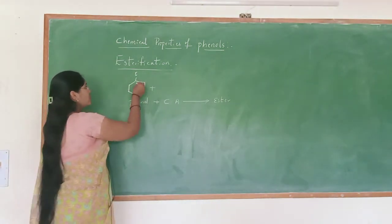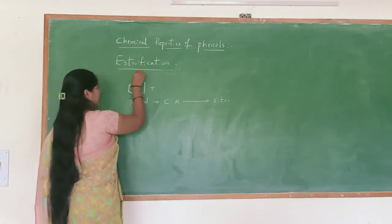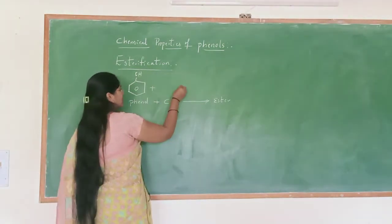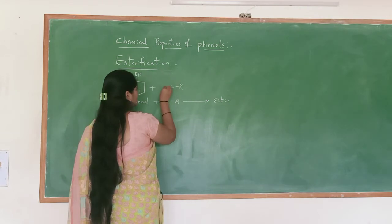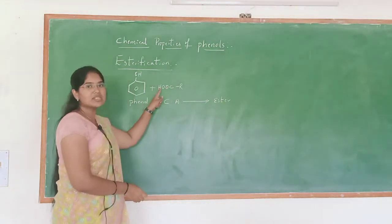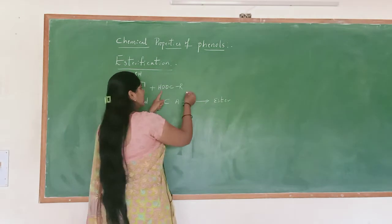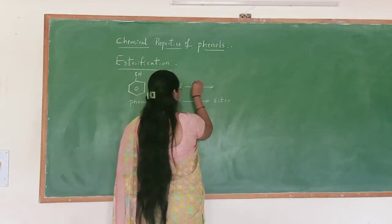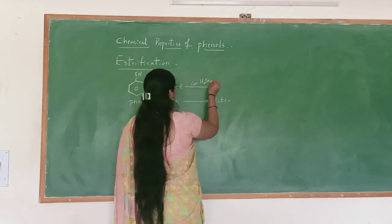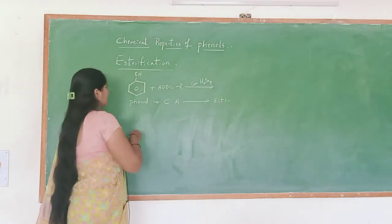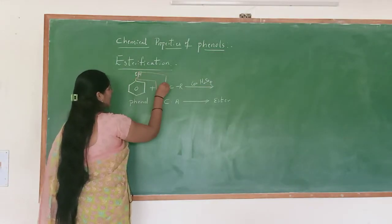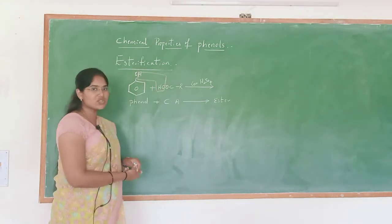So here I am taking the structure of phenol, that is Ar-OH. Now it is reacting with carboxylic acid, that is R-CO-OH. Now these undergo reaction in the presence of concentrated H2SO4. Hydrogen from phenol's OH and OH from the acid eliminate as H2O.